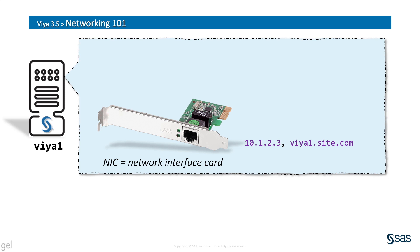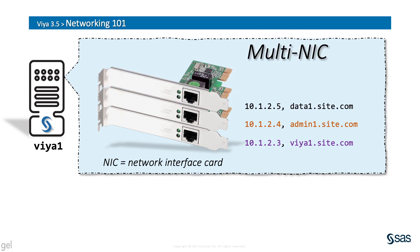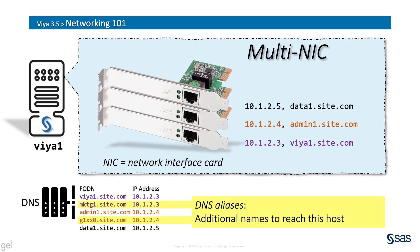Let's look inside this Viya1 host and see what networking equipment it has. There's one network interface card, or NIC, and it's associated with an IP address. That IP address is associated with the viya1.site.com name. But there's a second NIC in this host associated with a different IP address which has its own name too, and a third one as well. When there's more than one NIC in a host, we refer to that condition as multi-NIC, or multi-homed. There's DNS too, and in this list we see names and IP addresses referred to inside the Viya1 host, but there are also additional names that resolve to those IP addresses — those are DNS aliases, which are additional names that can be referenced on the network to access this machine. So how does Viya know which hostname, IP address, NIC, or DNS alias to use for its network communications between servers and clients?